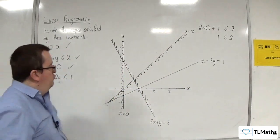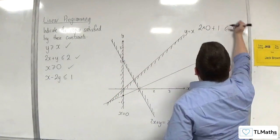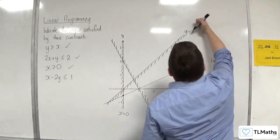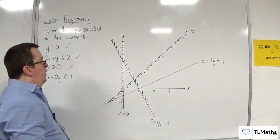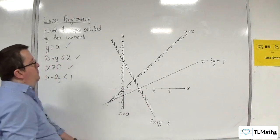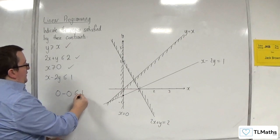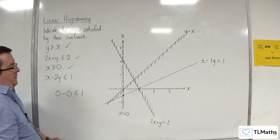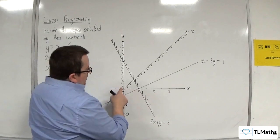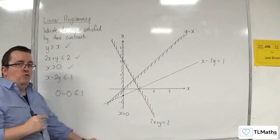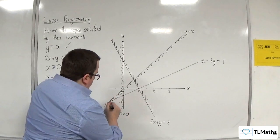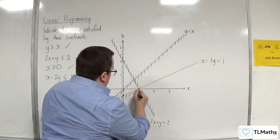And we want to identify which region we're looking for. So let's choose a point that's not on the line. Let's go with 0, 0 this time, shall we? So we've got 0 take away 0. Is that less than or equal to 1? Yes. So the above the line is in the region we want. So we're going to shade the region we don't.